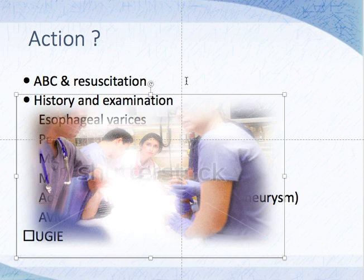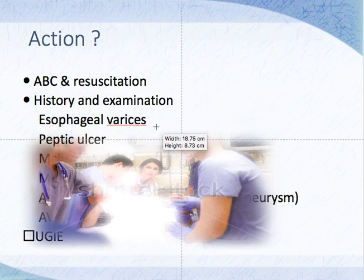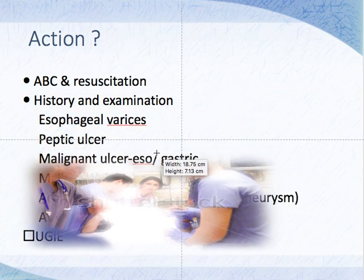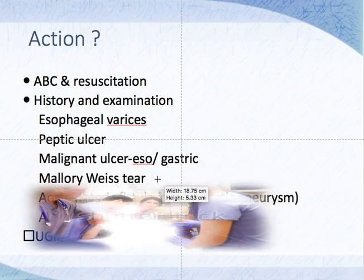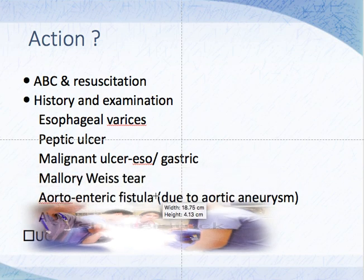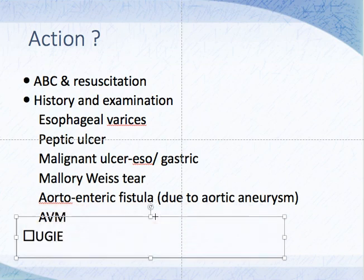List the possible causes. Take an appropriate history and do an examination. The common causes are esophageal varices, peptic ulcer bleeds, malignant ulcers — gastric cancer is more common to cause hematemesis than esophageal cancer, though esophageal can too — Mallory-Weiss syndrome, ruptured aortic aneurysm, and vascular malformations.